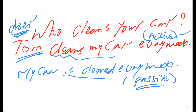If you need to write the name of the person who does the action, you use 'by'. For example, imagine his name is Noor - so: 'My car is cleaned every week by Noor.' You can use passive with 'by Noor'. We use passive for confirmation.